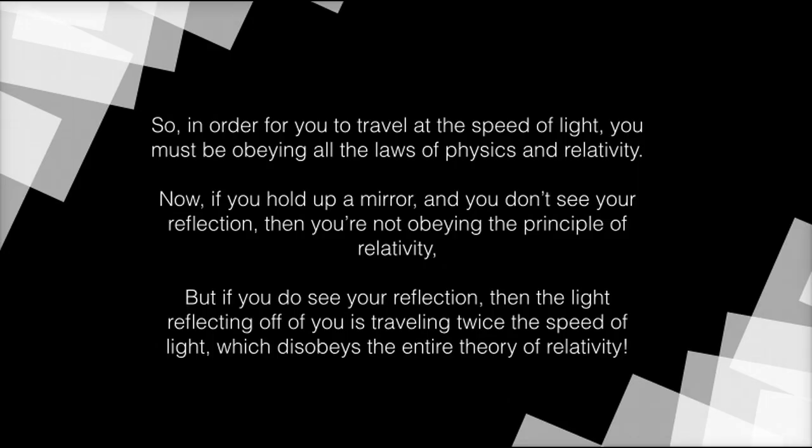So, in order for you to travel at the speed of light, you must be obeying all the laws of physics and relativity. Now, if you hold up a mirror and you don't see your reflection, then you're not obeying the principle of relativity. But if you do see your reflection, then the light reflecting off of you is traveling twice the speed of light, which disobeys the entire theory of relativity.